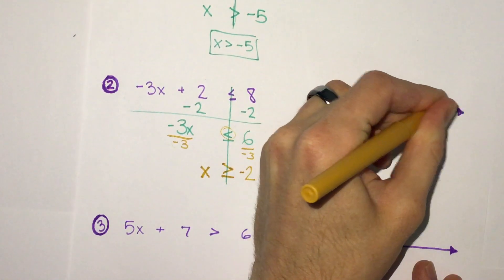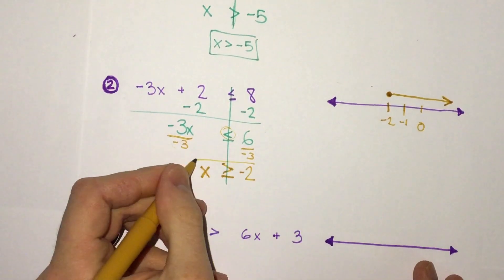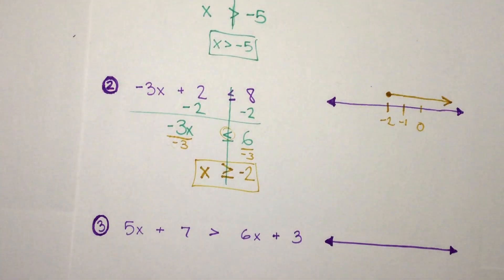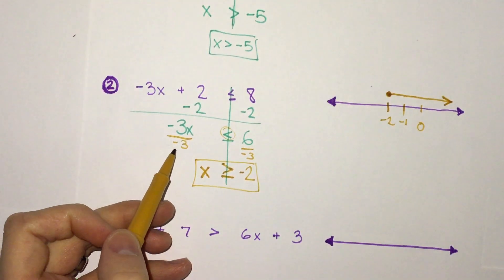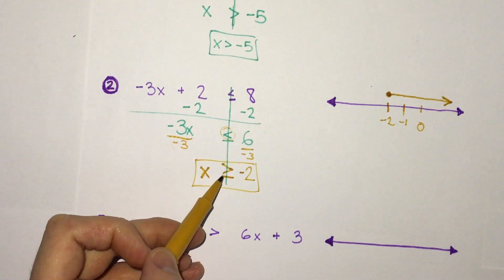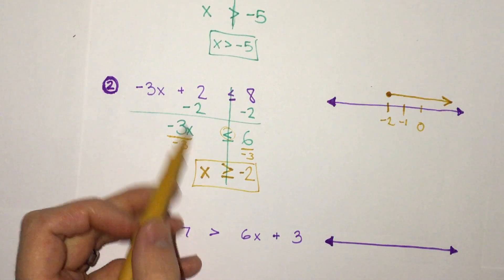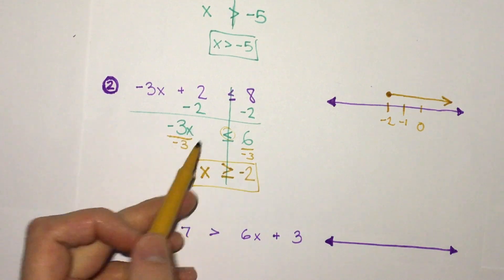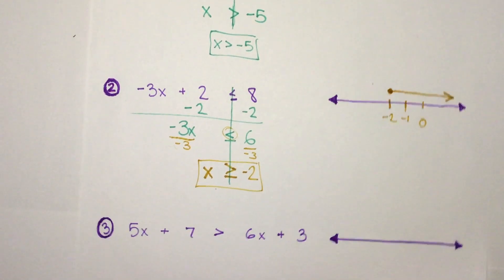One key to remember: multiplying or dividing by a negative number, we have to flip the sign. This doesn't apply for adding or subtracting with negatives, just multiplying and dividing by a negative number on both sides of the equation.